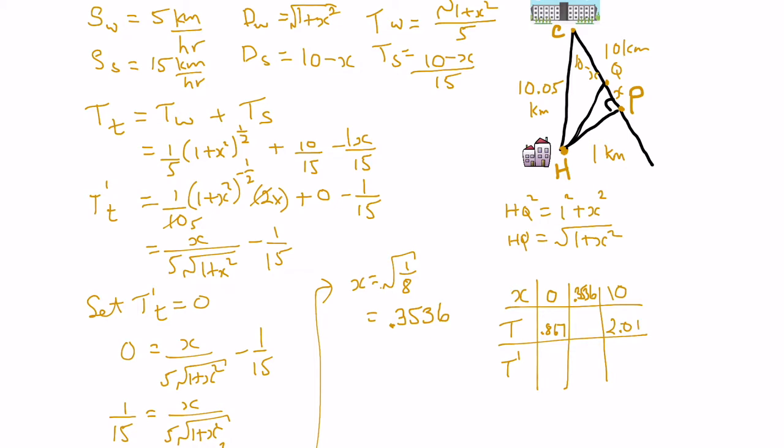Now, if we plug in 0.3536 into our time function here, if you work it all out, it ends up to be about 0.855 hours, which as you can see is a smaller amount of time than either of the other two scenarios, but let's also use the first derivative here to figure out if that is a minimum.